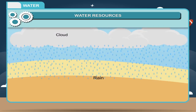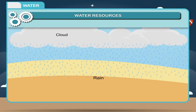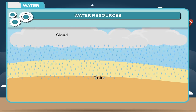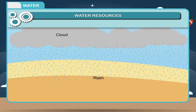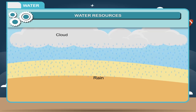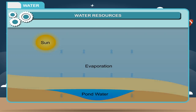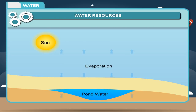Rain water is considered to be the purest form of natural water because clouds are condensed water vapor formed by water evaporated from various water bodies.